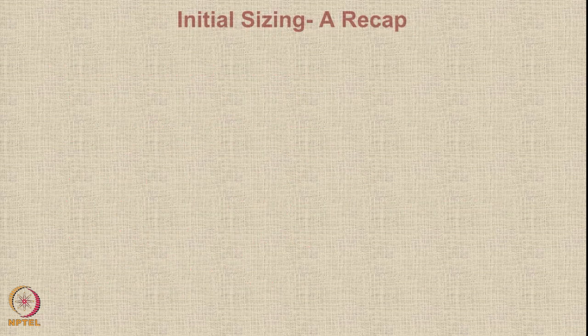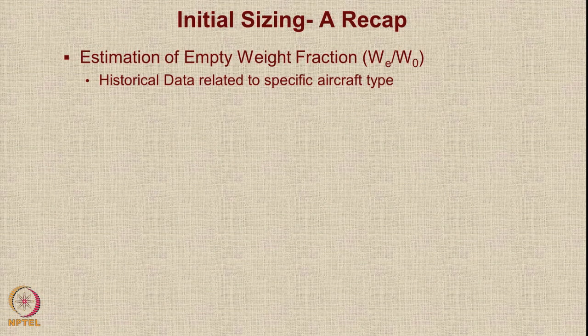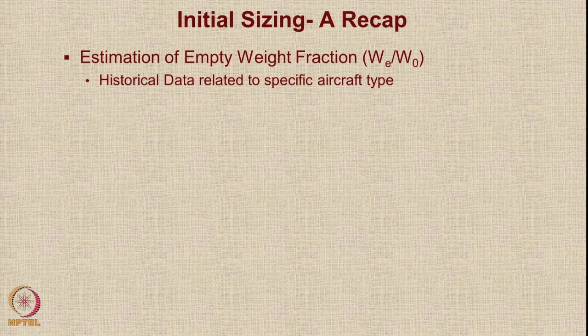Let us do a quick recap about initial sizing. If you have not watched the video lectures about initial sizing, I would recommend you go and do that before proceeding further. In initial sizing, the first thing we do is estimate the empty weight fraction. For this we use historical data related to specific aircraft type, using the equation A into W0 power C, where A and C are constants whose values come from lines drawn based on past experience — a separate line for each type, roughly parallel to each other.